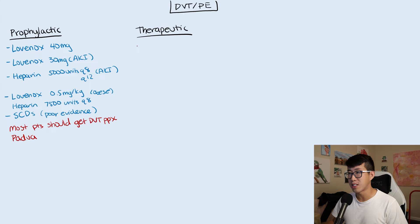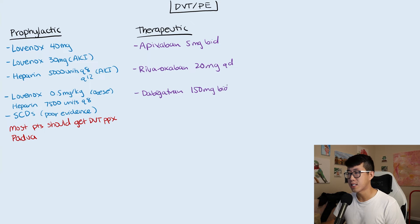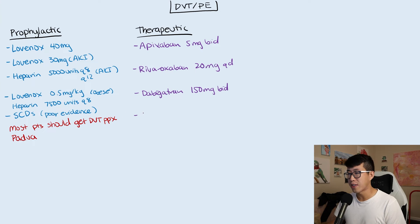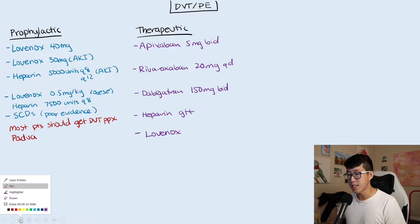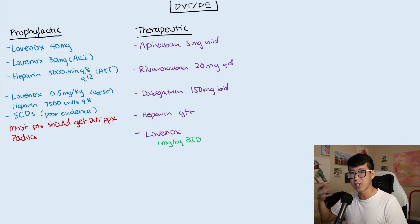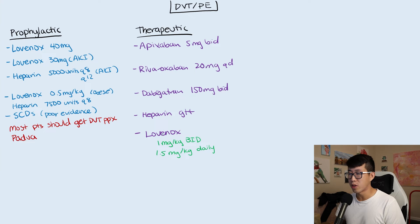For therapeutic anticoagulation, the major regimens include: apixaban 5 milligrams BID, rivaroxaban 20 milligrams daily, dabigatran 150 milligrams BID — which varies by formulary — and a heparin drip. Lovenox can also be used therapeutically, but at a different dose: 1 milligram per kilogram BID or 1.5 milligrams per kilogram daily. The 1 mg/kg BID dose is generally preferred as it has less bleeding risk and is better at preventing clots.